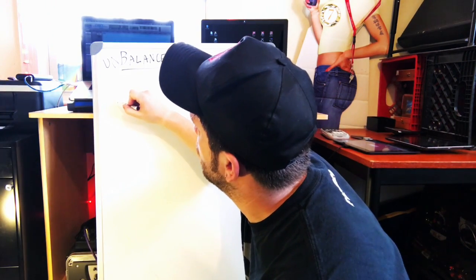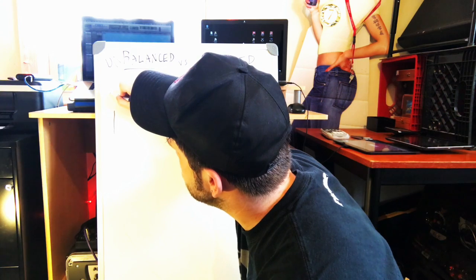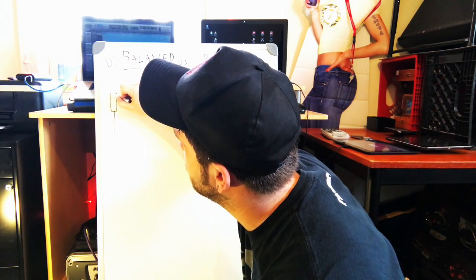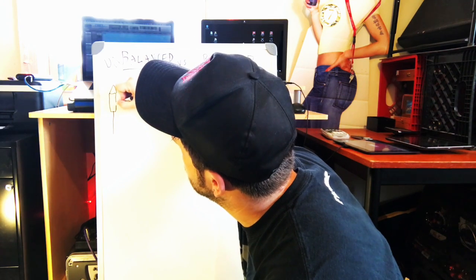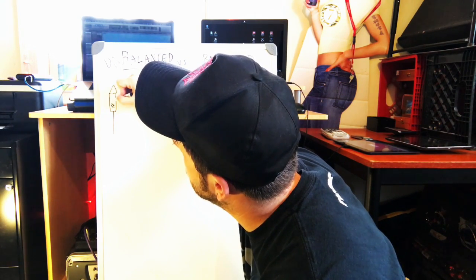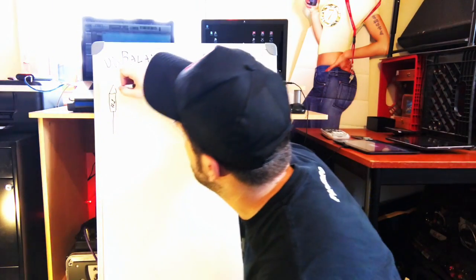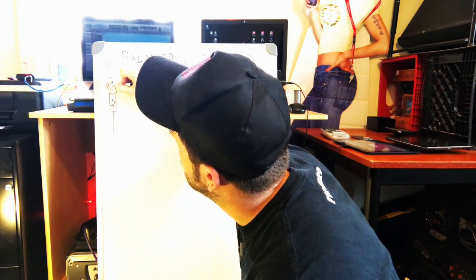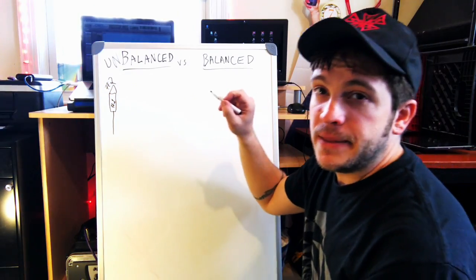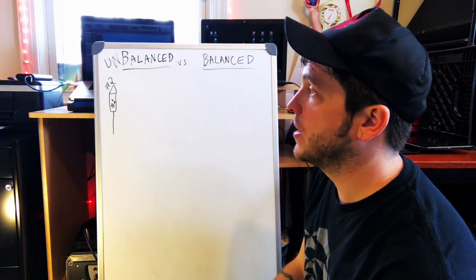So, with our quarter inch guitar cable, here's our cable. There are two conductors. There's the sleeve and the tip. The sleeve is pin 1, the shield and the ground, and the tip is pin number 2. That's what carries the voltage, the current, the signal that we are trying to transmit.